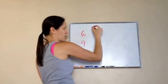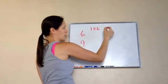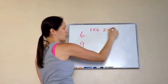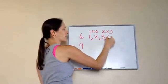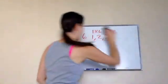What are the factors? 1 times 6 and 2 times 3. Okay, so let's put these in order. 1, 2, 3, and 6. Right? Yep.